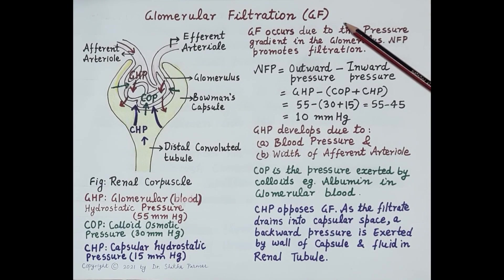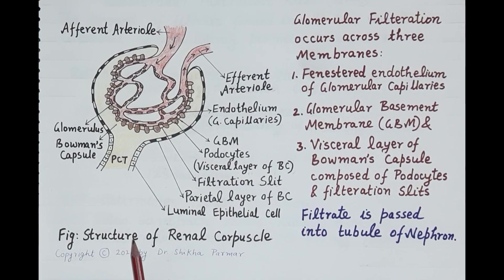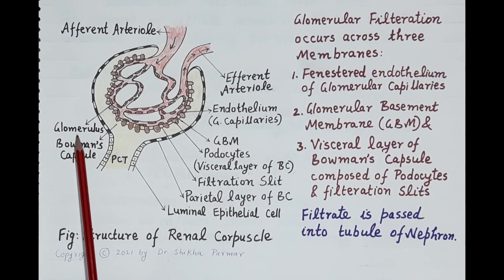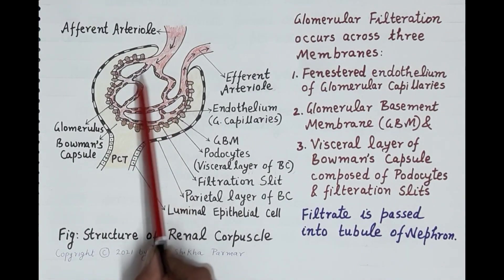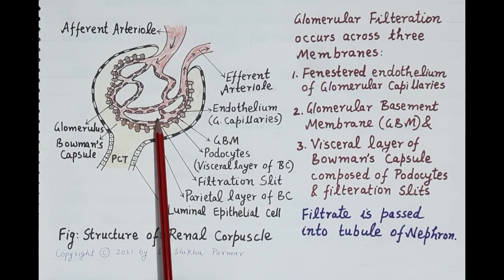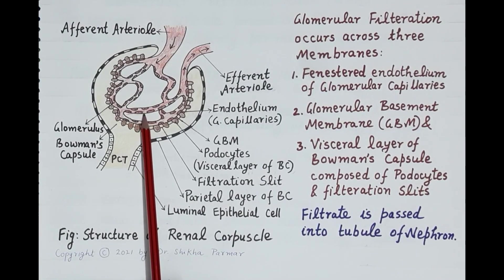Glomerular filtration is a process by which kidneys filter the blood. The renal corpuscle is the filtration unit of the nephron, and it is made up of the glomerulus and Bowman's capsule. The diagram shows a tuft of capillaries termed as the glomerulus. This glomerulus is made up of glomerular capillaries with endothelial cells, and in between the endothelial cells are present fenestrations or pores for the filtration of blood.